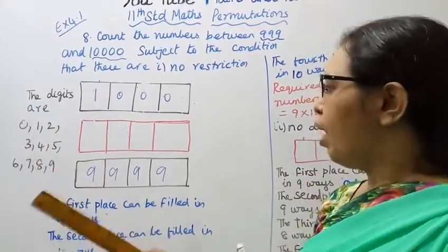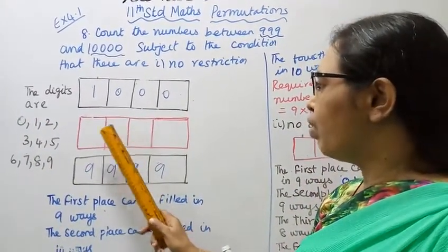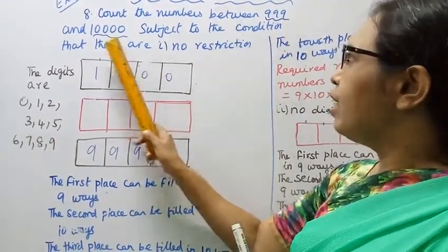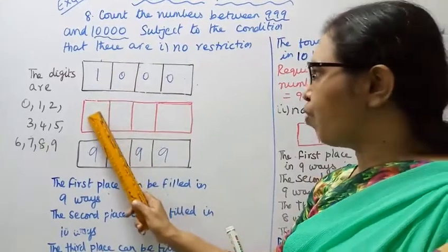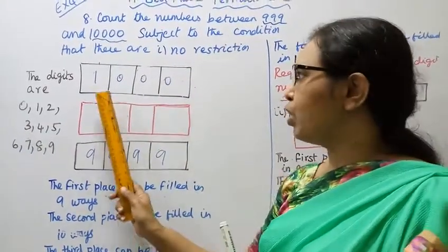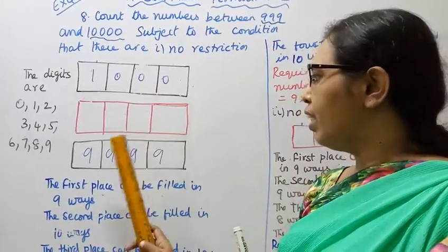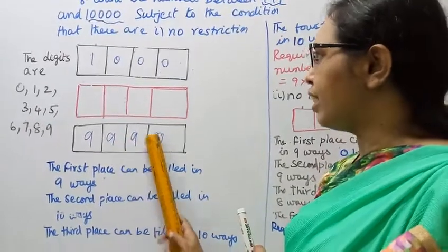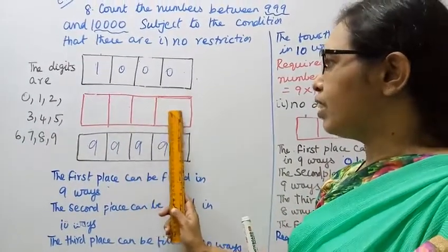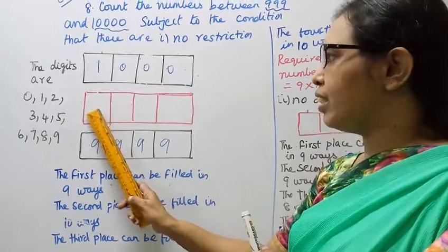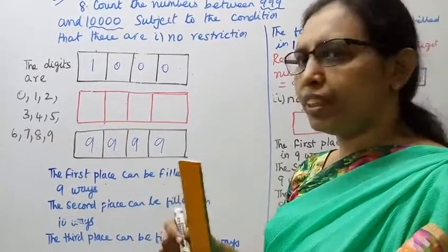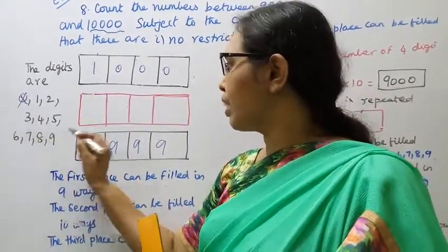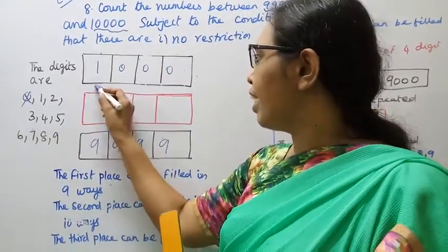With no restriction, we have a 4-digit number with places 1, 2, 3, 4. The starting number is 1000 and the ending number is 9999. Now, the first digit cannot be 0, so the first place can be filled in 9 ways.